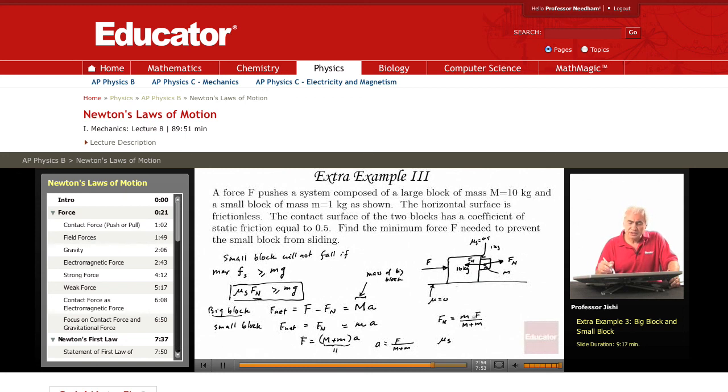And F_n is this: just mF over (M + m). This must be equal or greater than mg.